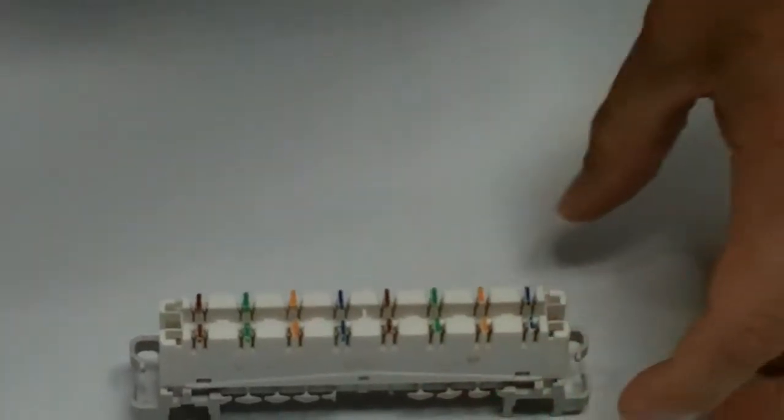Alright, this is the Krone Highband or LSA block. When you install these in the field, there will be a frame that has several of them.